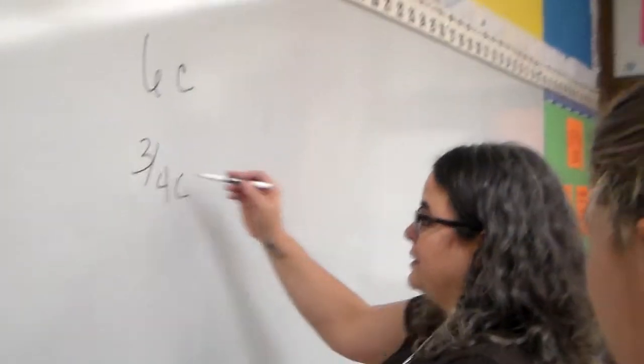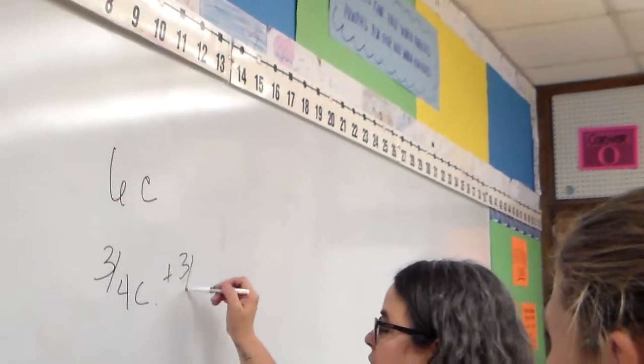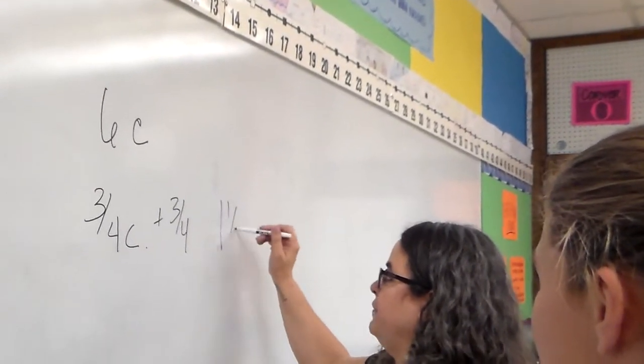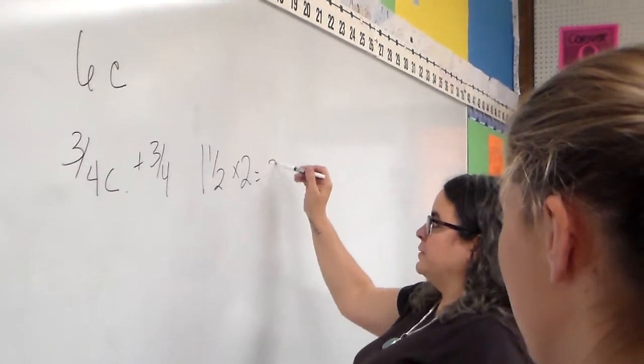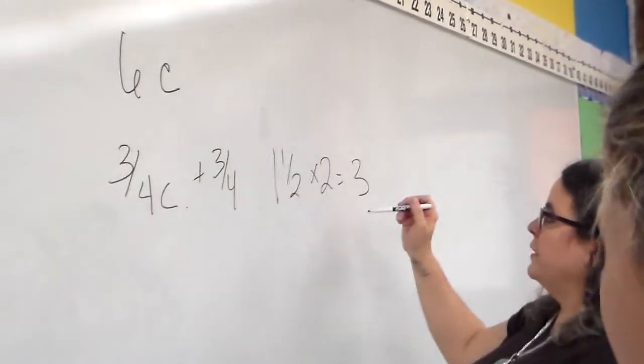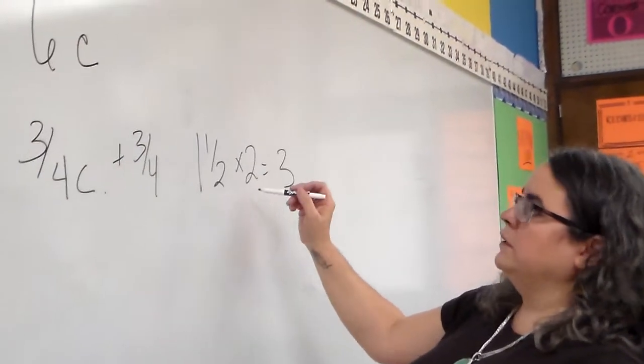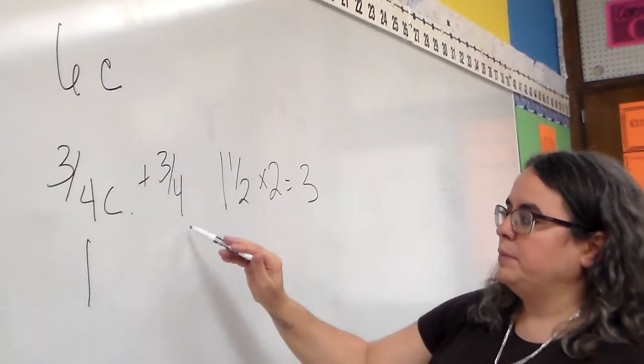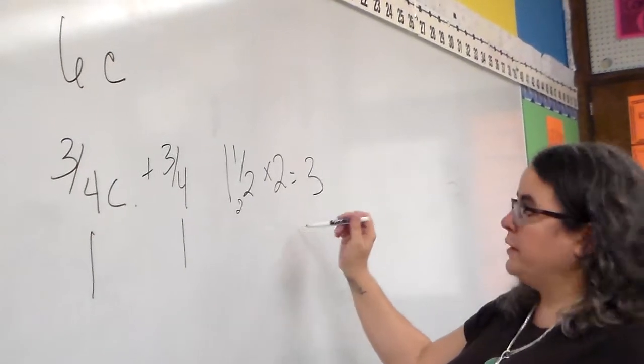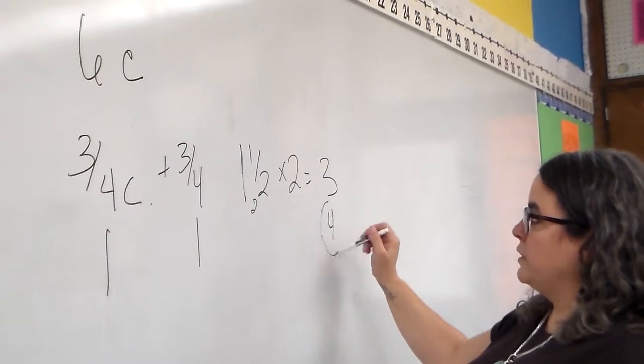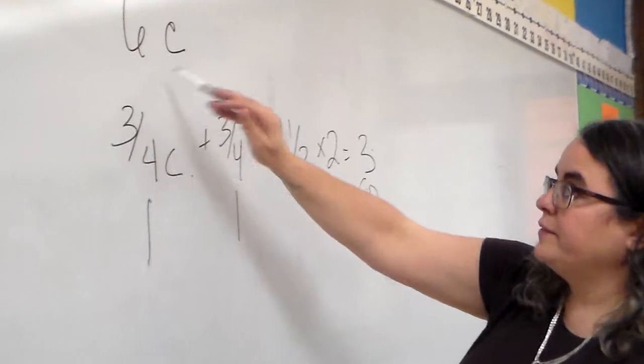So for me, the way I do this is I know three-fourths plus three-fourths is one and a half. And I know that it takes two one-and-a-halves to make three. So then that gives me one pizza, two pizzas. So that was two pizzas times two, which now gives me four pizzas for every three cups.